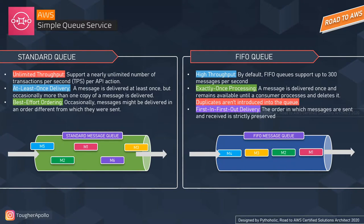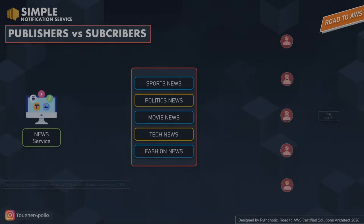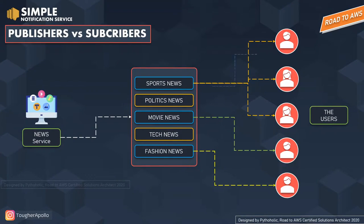FIFO means First In First Out — the order in which messages are sent and received is strictly preserved. The basic use case for standard queues is parallel processing, such as uploading videos to YouTube where encoding can happen simultaneously with multiple workers. FIFO queues are used when you need strict sequential execution, like executing a set of commands that must run in order.